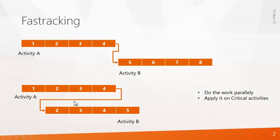First we will see the concept behind fast tracking. Consider activity A and B — activity B starts after completion of activity A, making the total project duration 8 days. If management asks you to reduce this to 5 days, you have no choice but to do the work in parallel. Doing work in parallel is called fast tracking, and it must be applied on critical activities.